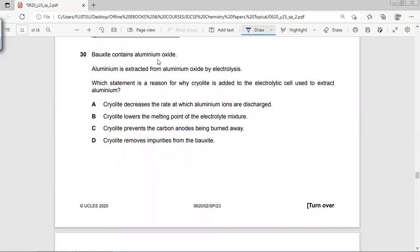A box contains aluminum oxide. Aluminum is extracted by electrolysis. This statement: why cryolite is added? We know that cryolite is a less pure form of aluminum ore and it is added to lower the melting point so that cost of electrolysis can be brought down.